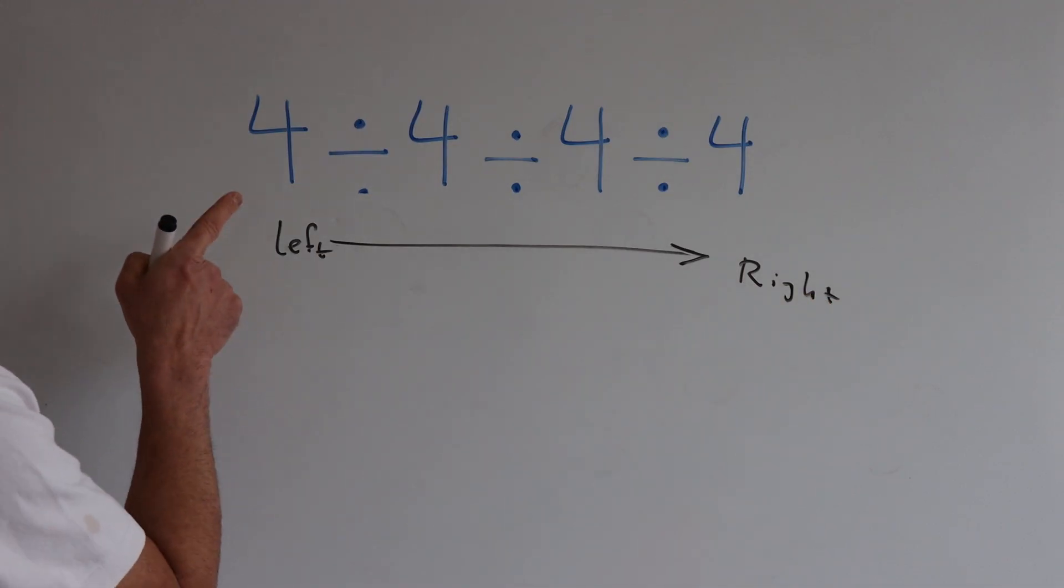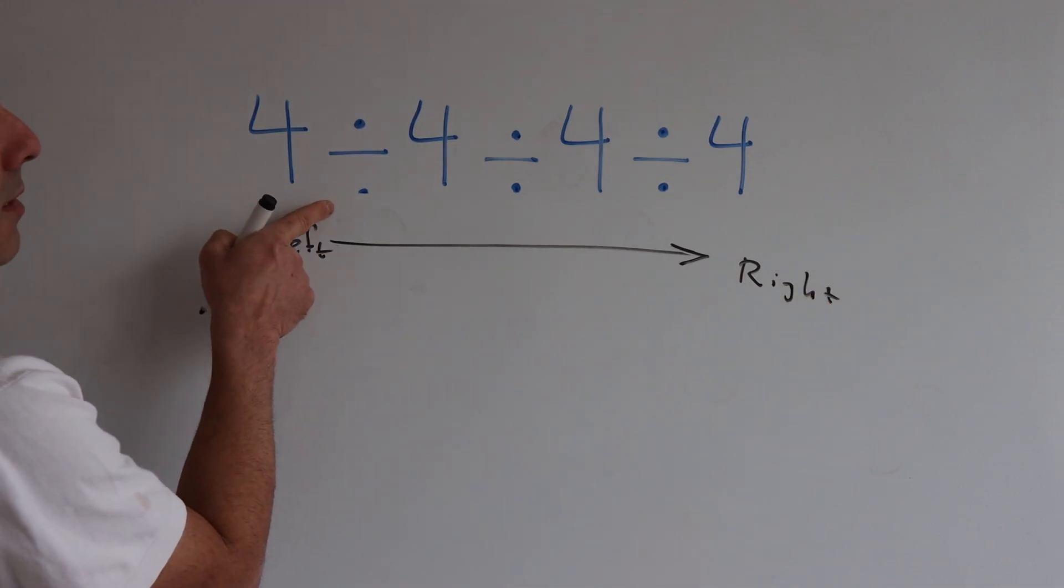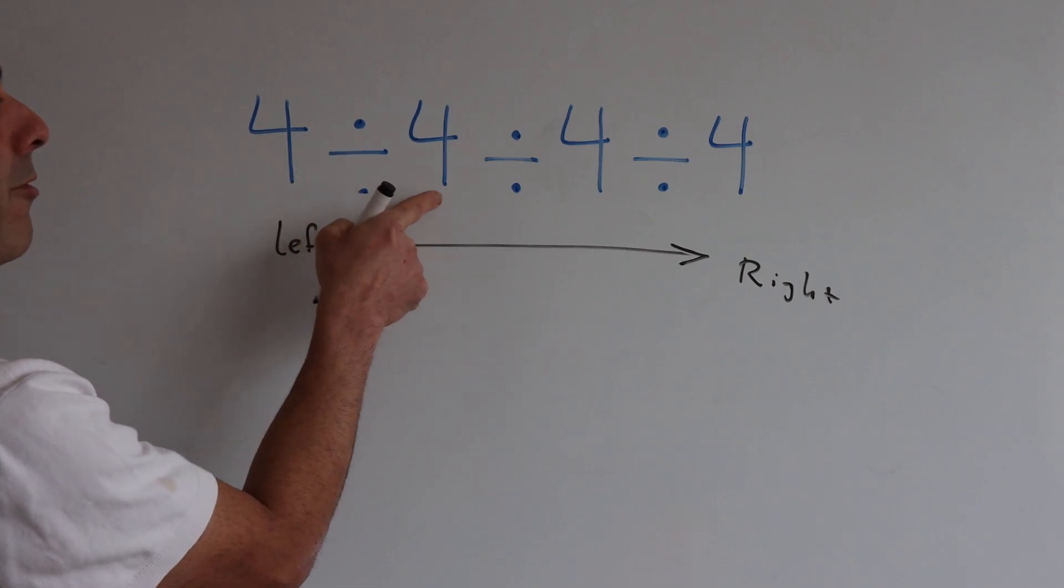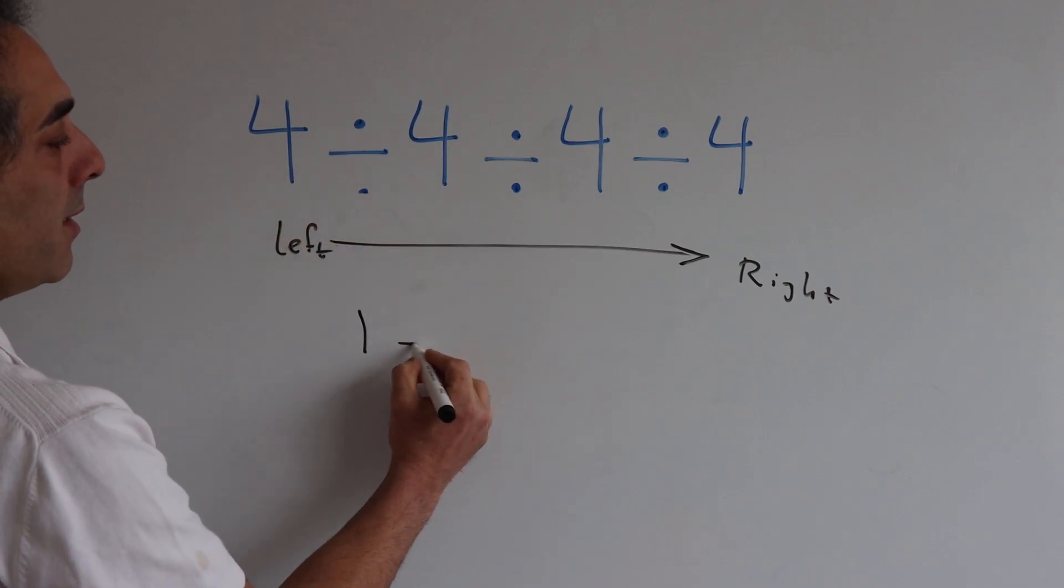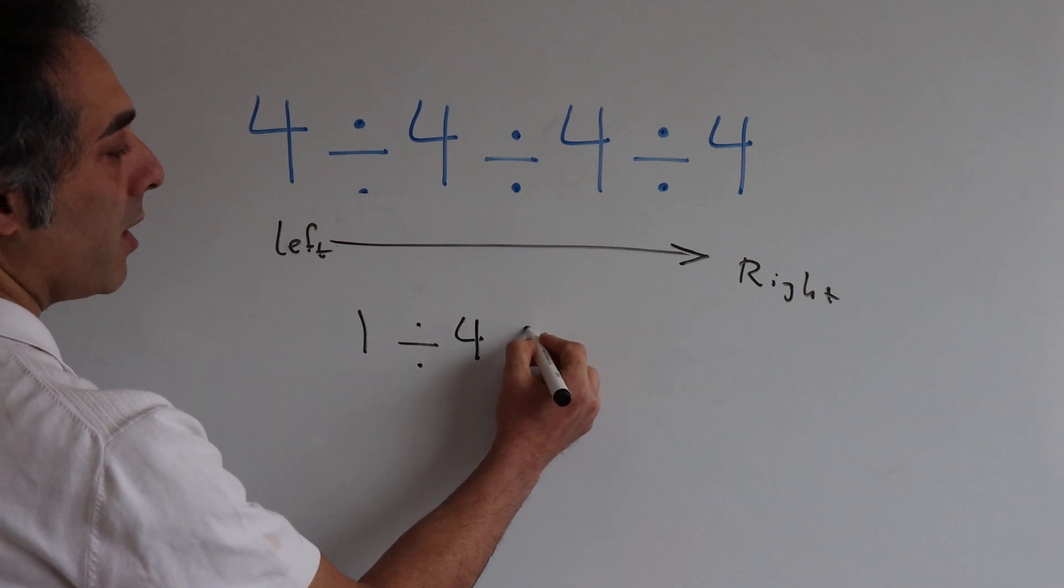So I always start from the left. 4 over 4 is 1, then divide on 4, divide on 4.